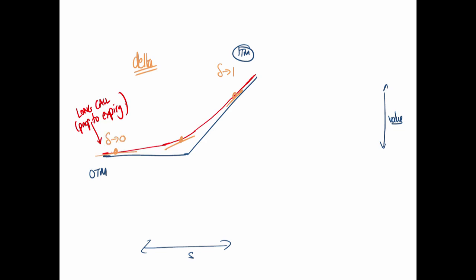In the middle, when directly at the money, delta is one-half. You've got half the exposure to the underlying when you're at the money. Delta is the exposure you're getting through the option — high exposure when the option behaves like the underlying, low exposure when out of the money.